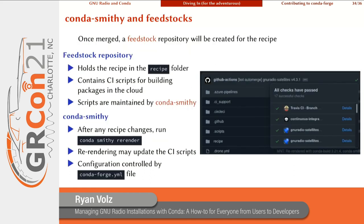Once the recipe is merged into conda-forge, a feedstock repository will be created to hold the recipe. The feedstock holds the recipe in the `recipe` folder and also contains CI scripts for building packages in the cloud. These scripts are maintained by a tool called conda-smithy. After any time the recipe changes, you'll want to run `conda smithy rerender`, which may update the CI scripts included in that repository. You can configure conda-smithy by editing the `conda-forge.yml` file in that repository.